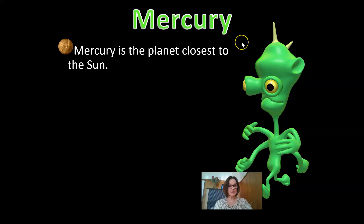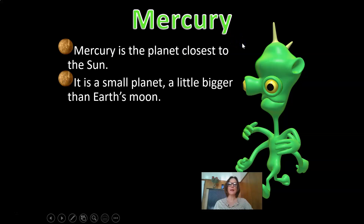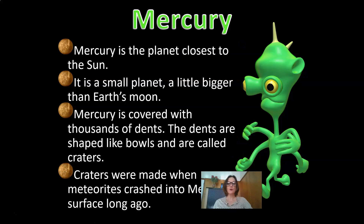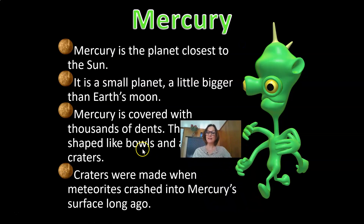Mercury is the closest planet to the Sun. It is a small planet, a little bigger than Earth's Moon. Mercury is covered with thousands of dents shaped like bowls called craters, which were made when meteorites crashed into Mercury's surface a long time ago.